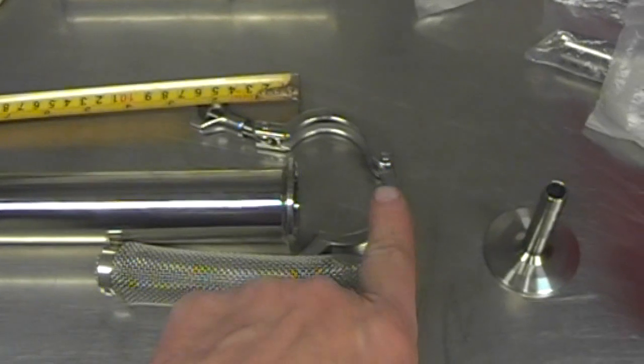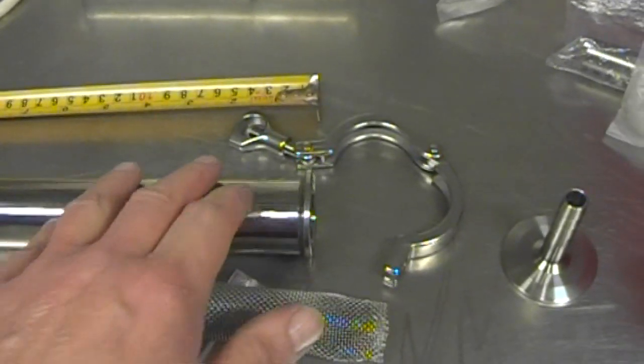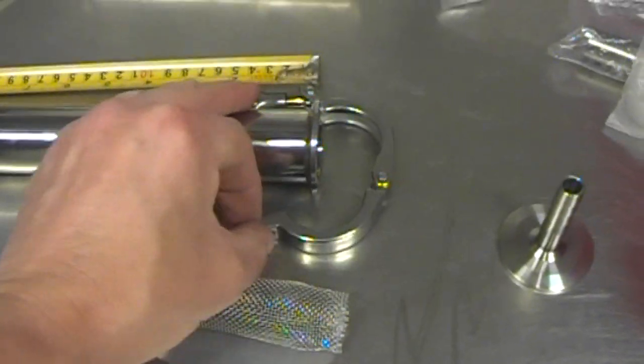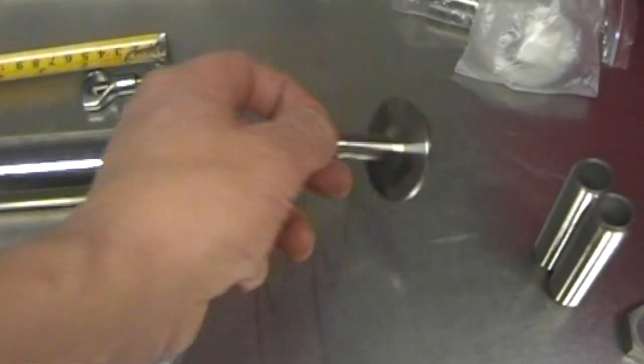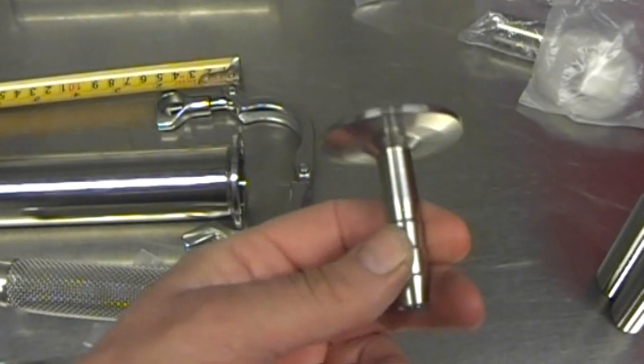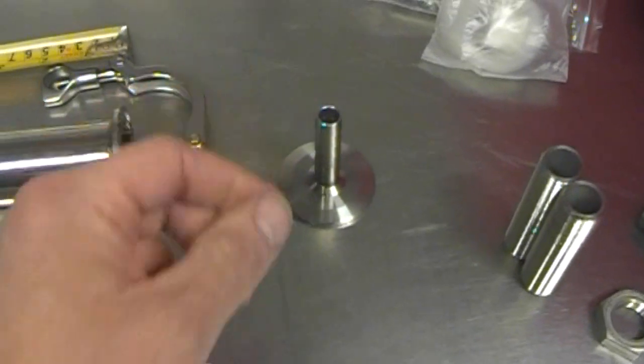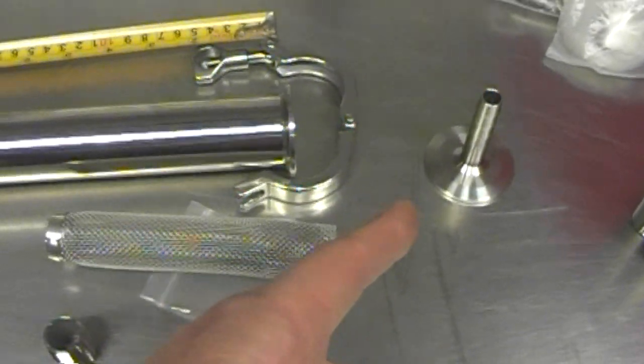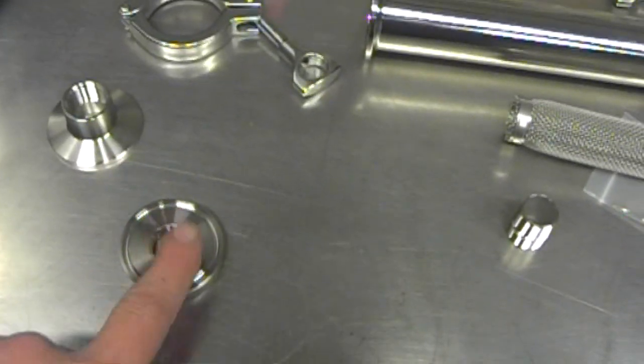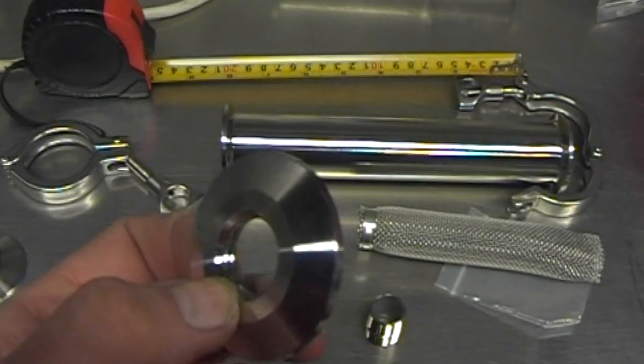You go on eBay, cheapest you'll find tri-clamps for is about two and a half quid. Same for these, around I bought a pair of these with a tri-clamp for a fiver.